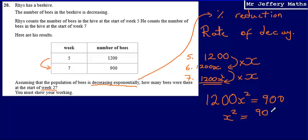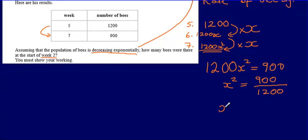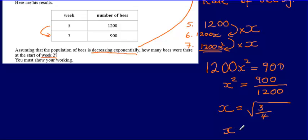From 1,200x² = 900, I get x² = 900 ÷ 1,200. Then x equals the square root of 900 divided by 1,200, which is the square root of three quarters. Simplifying, x equals √3 over 2. That is my percentage multiplier — the factor by which the bee population is multiplied from week to week.